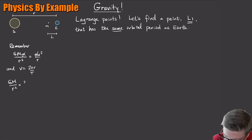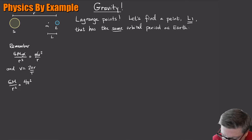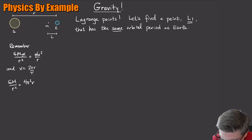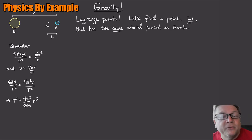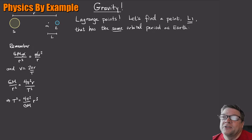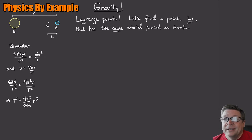Plugging that in, you get GM over r squared equals 4π²r over T squared. Rearranging, the period squared is 4π²r³ over GM — that's Kepler's third law. So that's the period of an object a distance r away from the Sun.